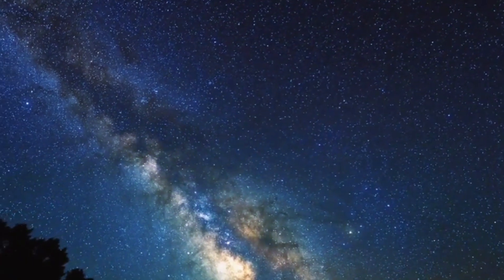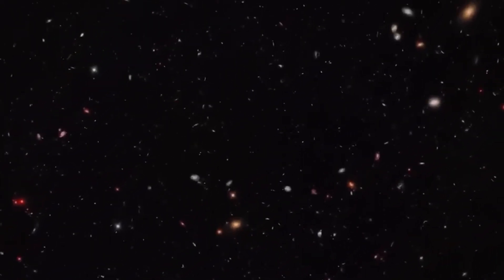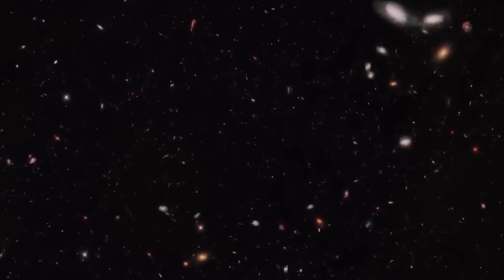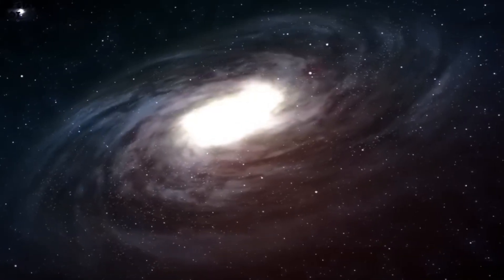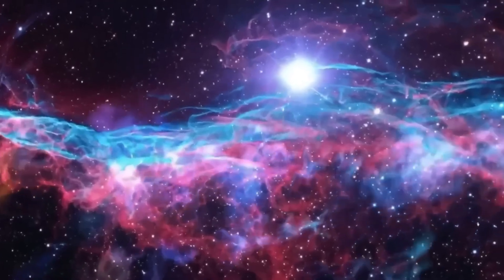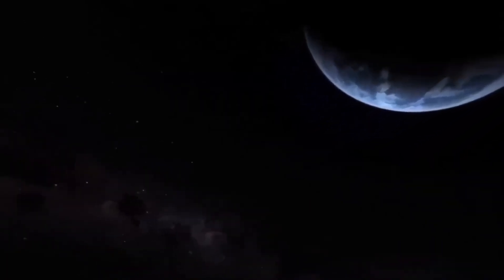In the vast expanse of space, a mysterious planet exists in the habitable zone of its star, Proxima Centauri. This planet is not just any ordinary rock. It's Earth's cousin. Proxima Centauri b, located a mere 4.2 light-years away from us, is shrouded in mystery and wonder.